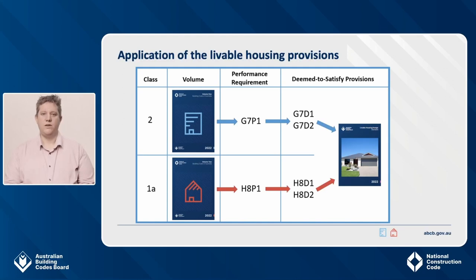For example, in the diagram, the P in G7P1 and H8P1 means these are performance requirements. And similarly, the D in G7D1, G7D2, H8D1 and H8D2 means these are DTS provisions. The liveable housing requirements are in Part G7 of NCC Volume 1 and Part H8 of NCC Volume 2.